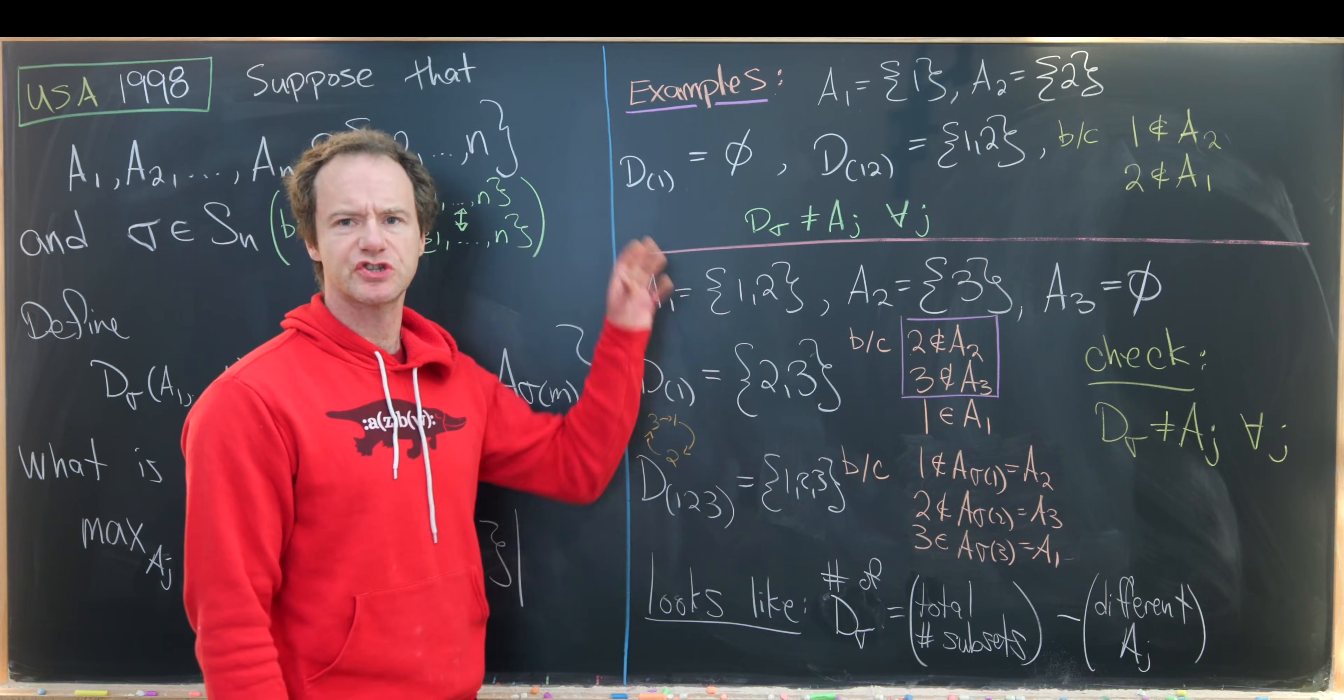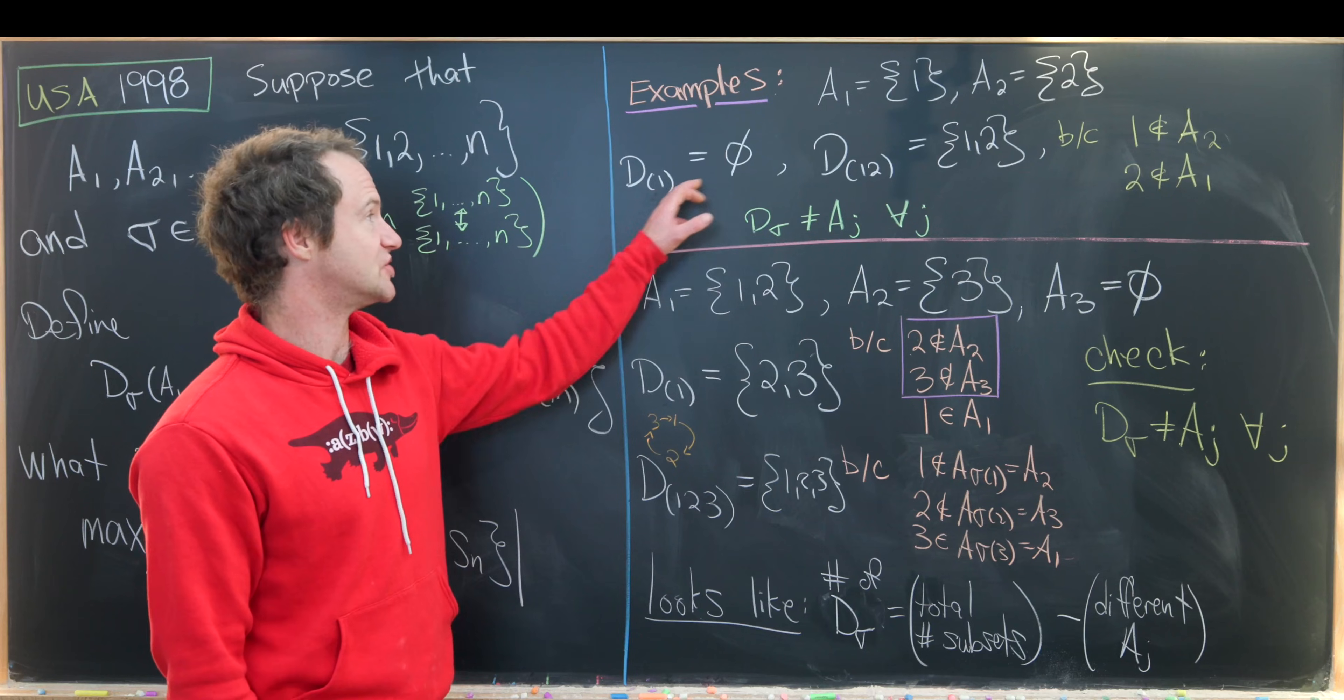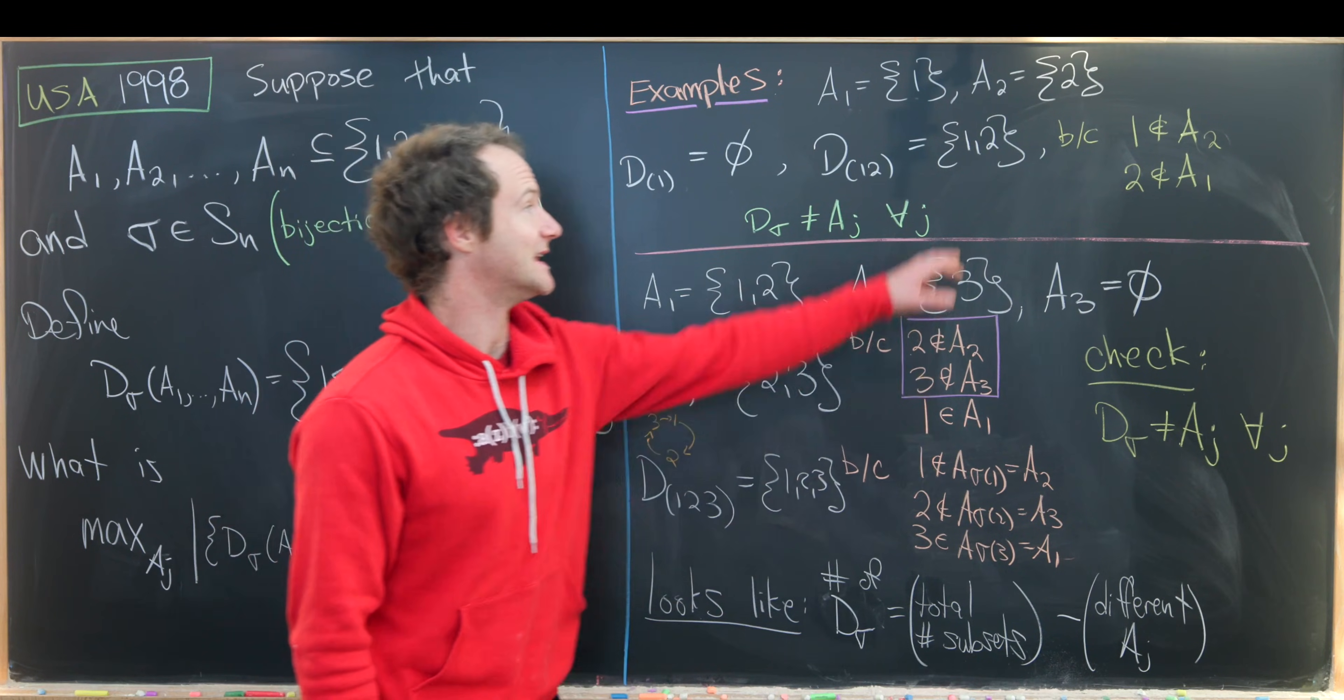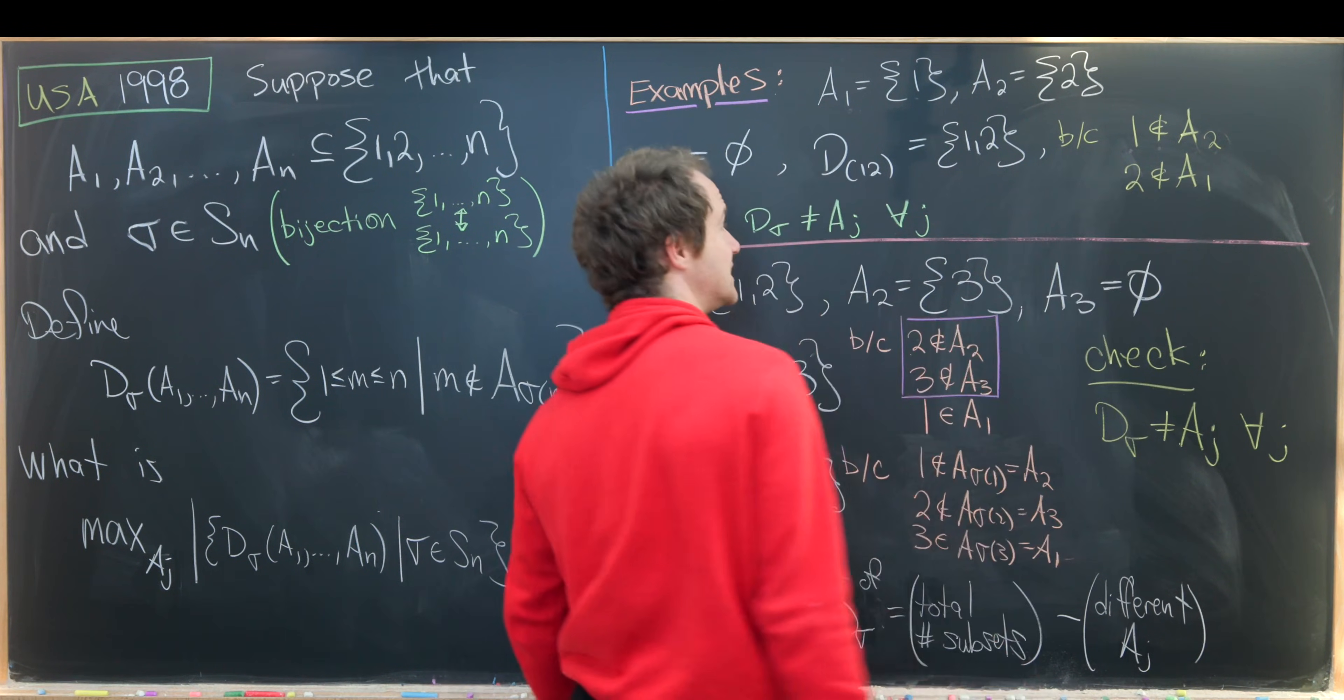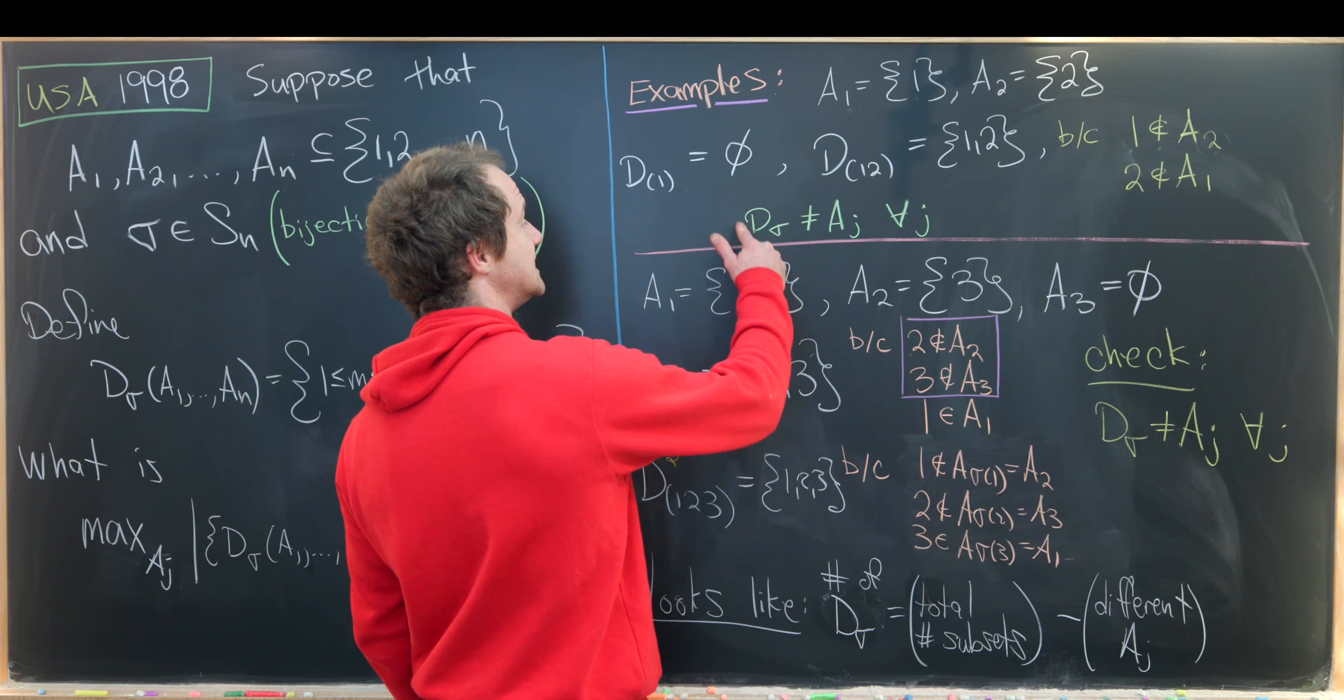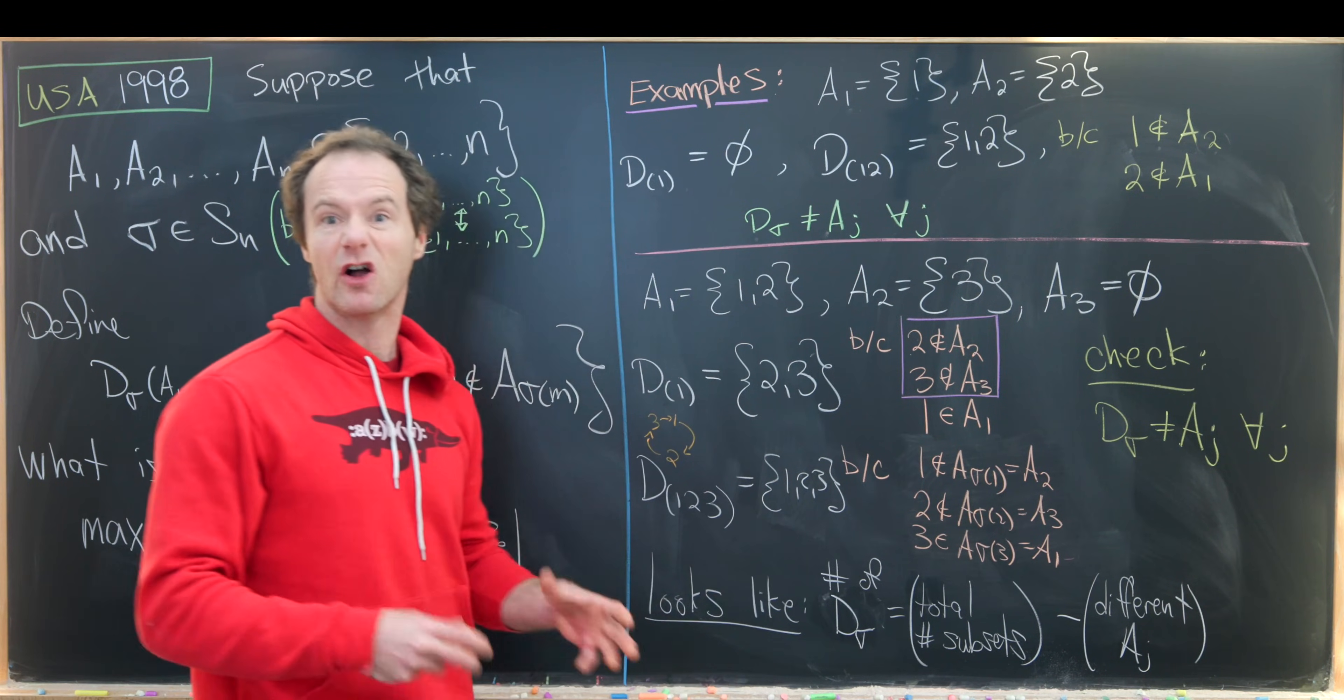And now let's look at some examples. So we'll start off with an n equals 2 example where our sets A1 and A2 are just the singletons 1 and 2. So let's notice here D associated to the identity bijection is the empty set. That's because 1 is in A1 and 2 is in A2. But D associated to the bijection which takes 1 to 2 and 2 back to 1 is the entire set 1, 2. And that's because 1 is not in A2 and 2 is the image of 1 under this bijection. And then similarly for 2. Now maybe the thing to notice about this which will give us structure for the larger case is that none of these D_σ sets are equal to our original Aj sets. And furthermore if we collect all of the D_σ sets and the Aj sets we get all of the subsets.